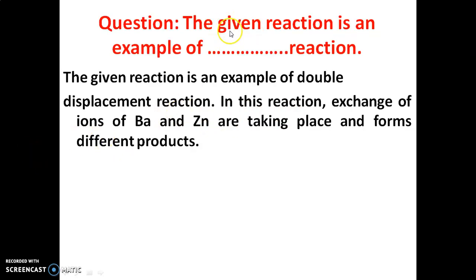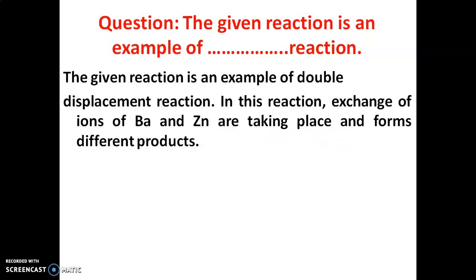The given reaction is an example of a double displacement reaction. In this reaction, an exchange of ions of barium and zinc takes place, forming different products. This reaction is an example of a double displacement reaction.